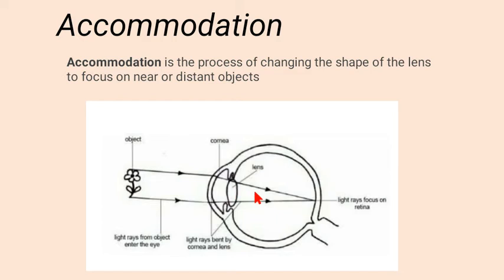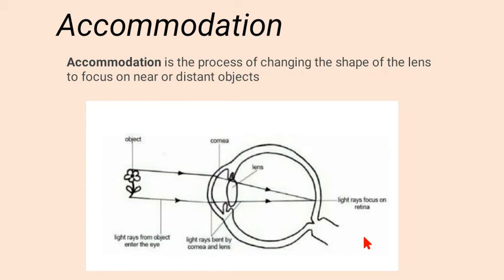The purpose of this double refraction is to focus the light rays properly on the retina so that an image is produced. When these light rays focus on the retina, the retina converts them into electrical signals and transfers them to the brain by means of the optic nerve. The brain then interprets the message and we are able to see the objects clearly.